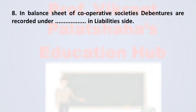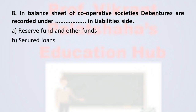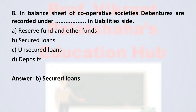Question number 8: In the balance sheet of cooperative societies, debentures are recorded under ___ on the liability side. Option A: reserve fund and other funds. Option B: secured loans. Option C: unsecured loans. Option D: deposits. The correct option is option B, secured loans. Debentures are recorded under secured loans on the liability side of the balance sheet. Therefore, the correct option is option B.